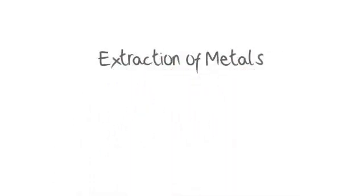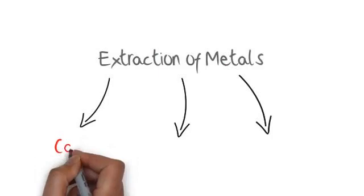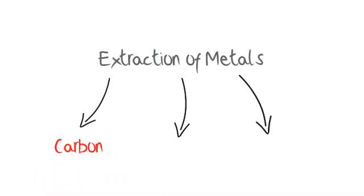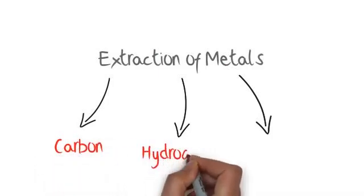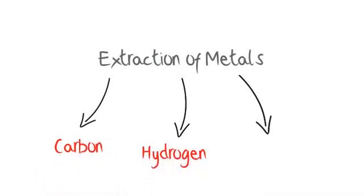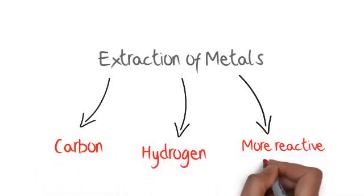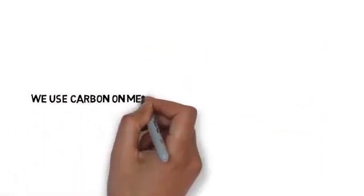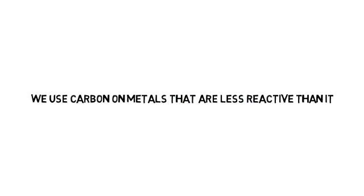Extraction of metals. There are many ways you can extract metals. One method is via carbon. You can also do it with hydrogen or more reactive metals. We use carbon on metals that are less reactive than it. If they are more reactive, it is difficult to extract metals using carbon.